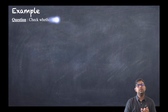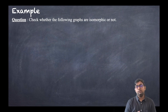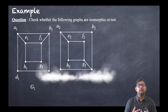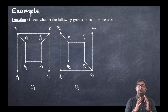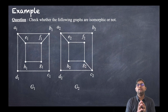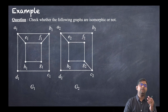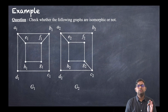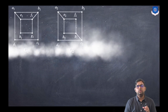Now let us discuss another example: check whether the following graphs are isomorphic or not. This is a good example. Call the first graph G1 and the second graph G2. Just by looking at both graphs you might say they are isomorphic, but they are not. There is only a slight change — vertex f1 is shifted to a different edge — but still these graphs are not isomorphic. Let us see how.